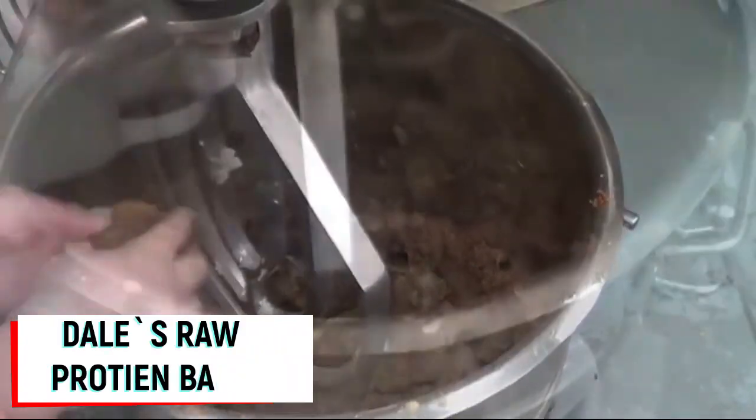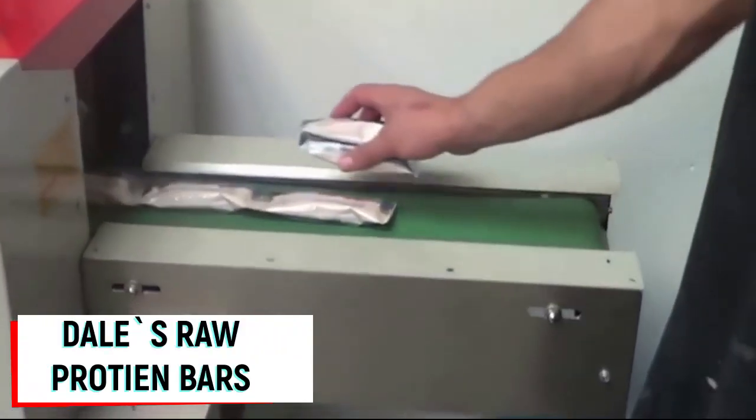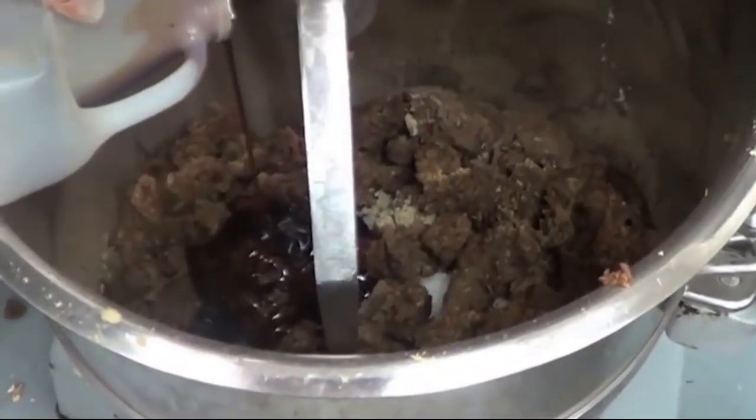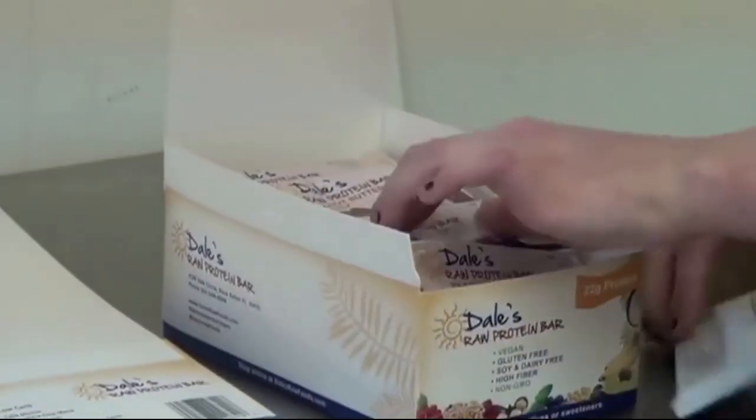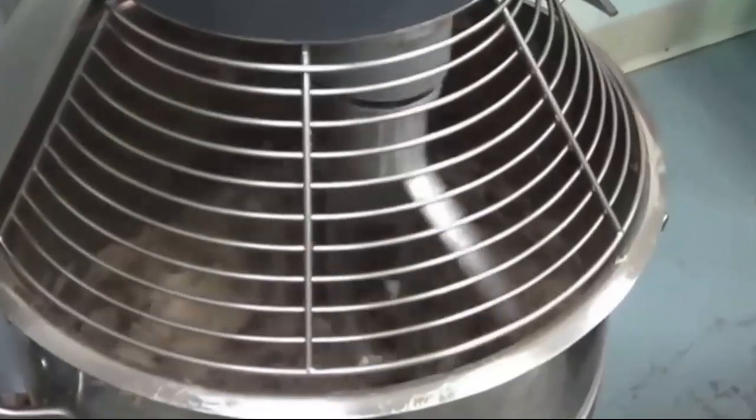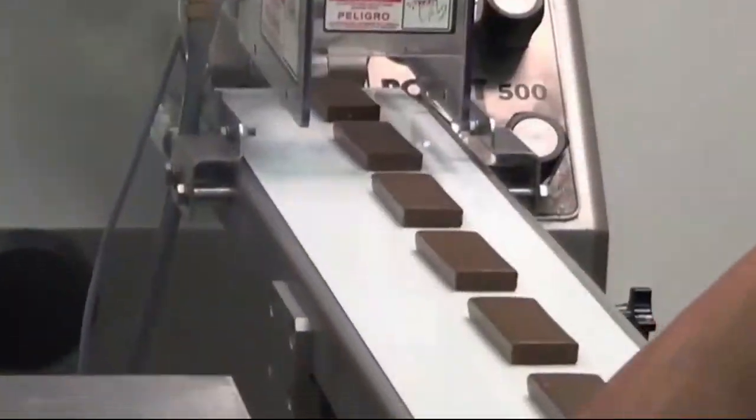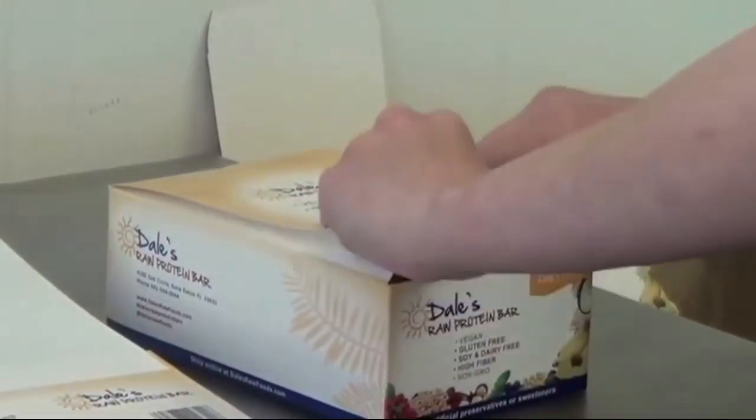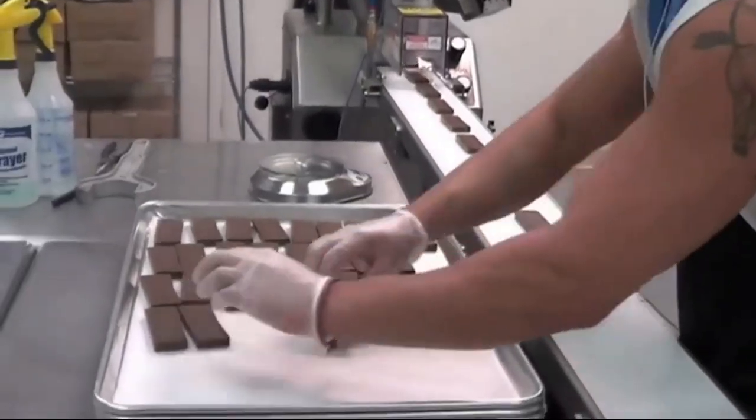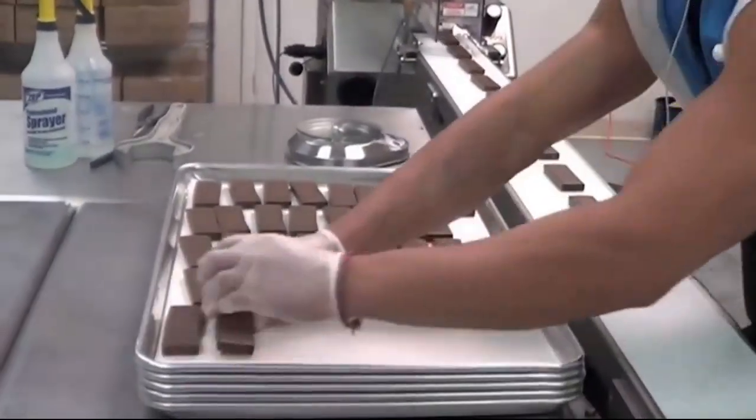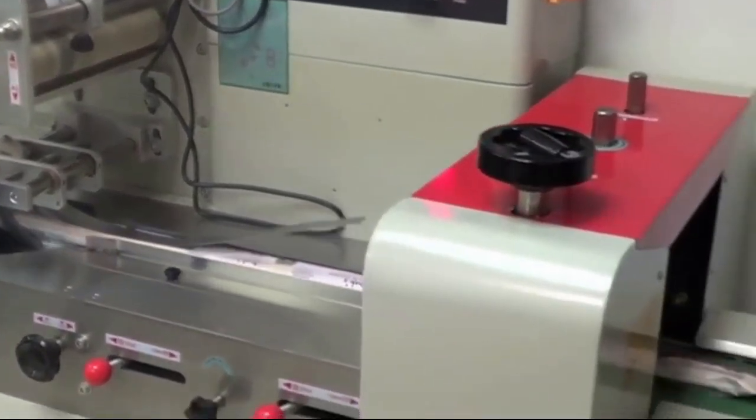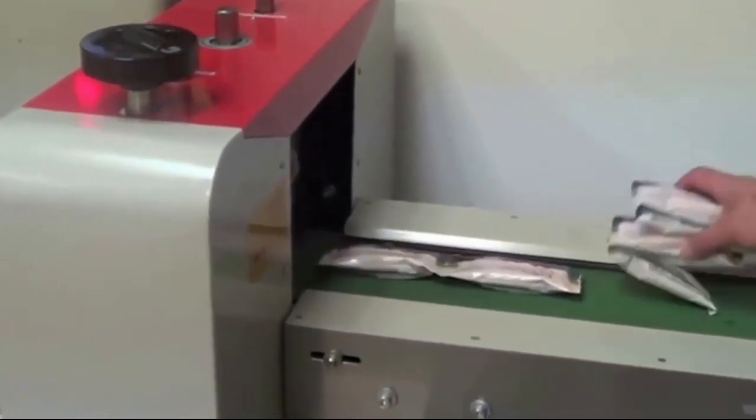Dale's raw protein bars. For the production of protein bars, the mix whose composition remains unknown is placed manually in a small mixer, where it's mixed together with special syrup. The resulting product is cut in the form of little bricks, covered with chocolate glaze, then packed and placed in boxes.